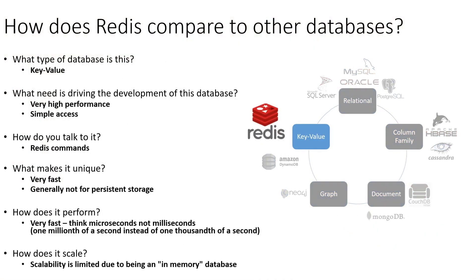We've seen this slide several times throughout the semester as we've moved from relational to column family to document to graph, and now to our final genre of database management systems: key-value databases, and in particular Redis. Redis is a key-value database, and the real reason for Redis to exist is to have very simple data access.